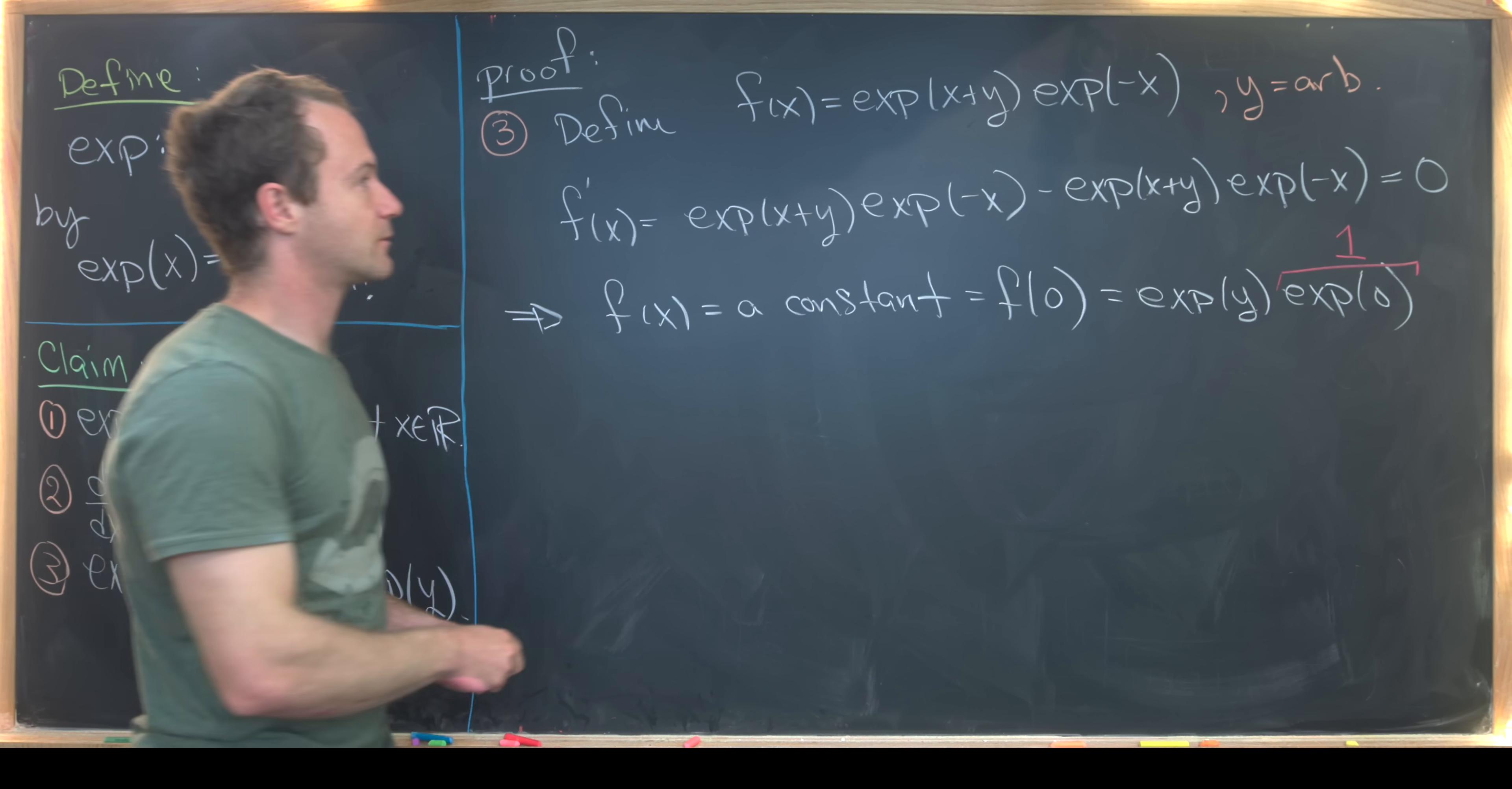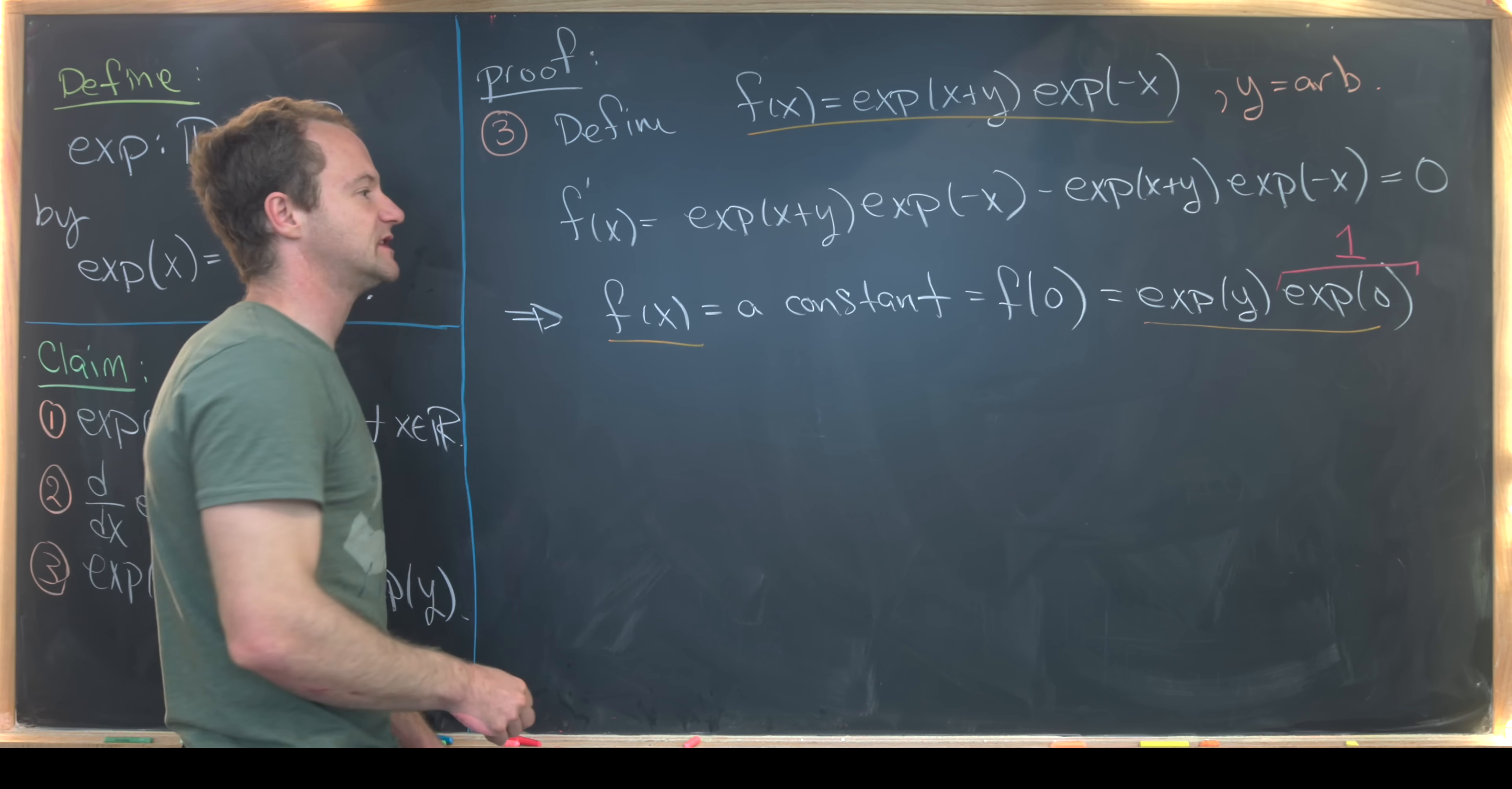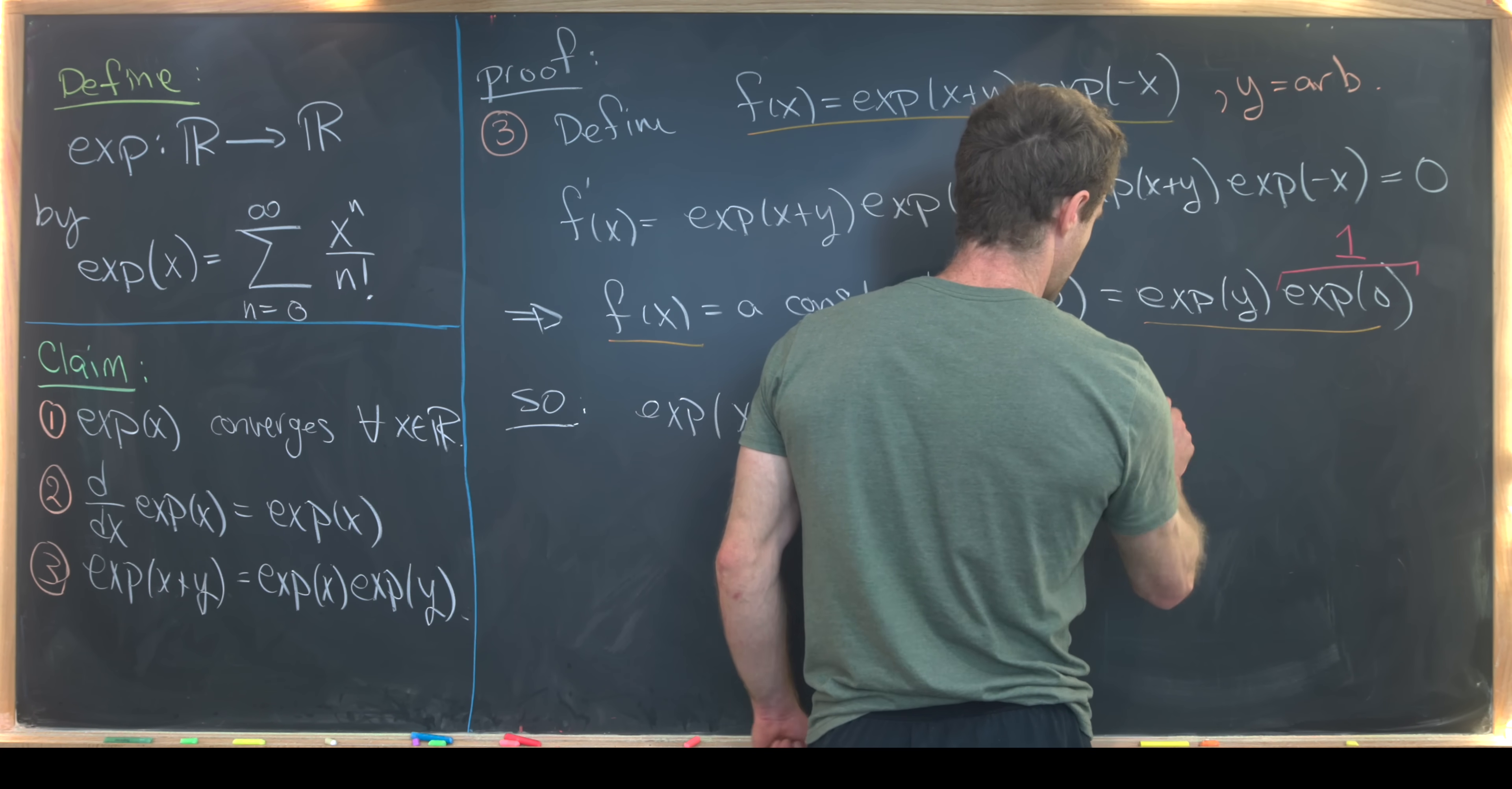So now let's see what we've got. We've got this definition of the function up here. And then via this kind of differential equation argument, we've got this other definition of the function. But now we can put these two things together to create an equation. So our equation looks like this. exp(x+y) times exp(-x) equals exp(y).